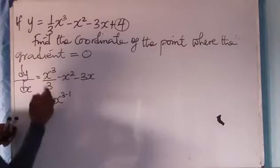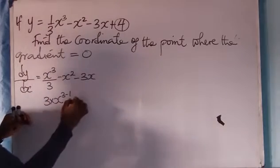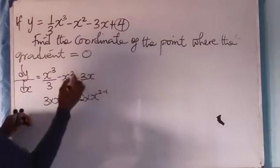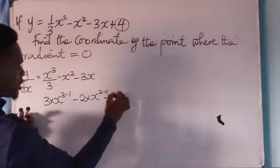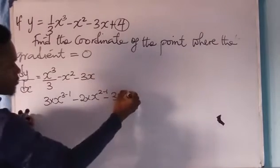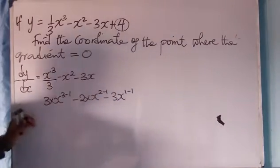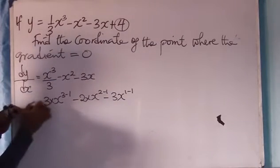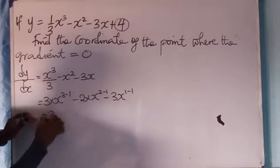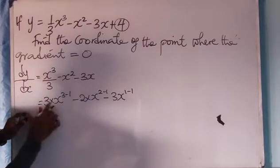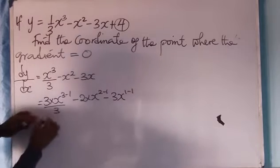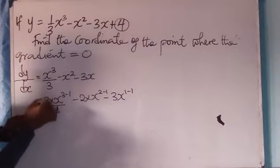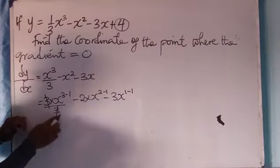becomes 3 times x, then 3 minus 1. There is minus 1 as a power, then minus 2 times x to power 2 minus 1, then minus 3x, you have 1 minus 1. There is always minus 1 as a power. Then, having this, this is going to be 3. This 3 over 3, don't forget that, about 3, and this will go into this. So, this 3 will cancel out this 3.